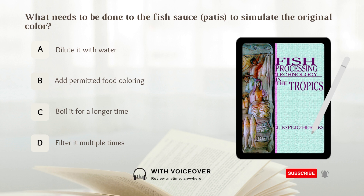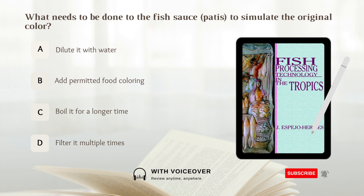What needs to be done to the fish sauce to simulate the original color? A) Dilute it with water. B) Add permitted food coloring. C) Boil it for a longer time. D) Filter it multiple times.